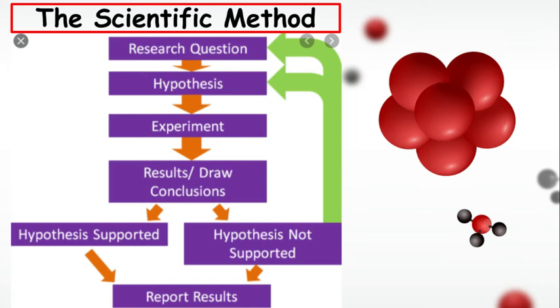Now, at the hypothesis stage, where it's supported or not supported based on your experiments, if it is not supported, you can see the green arrows, you've got to go back to the research question, maybe rephrase your question, maybe change your hypothesis, or review your hypothesis.